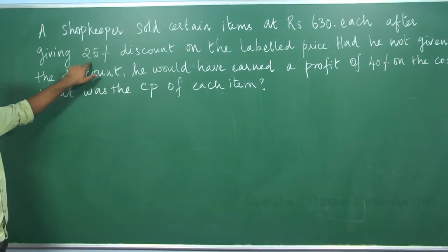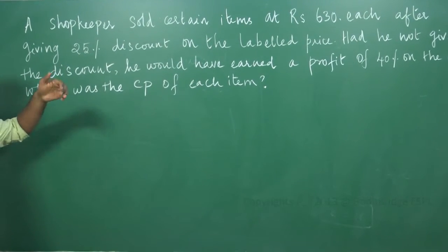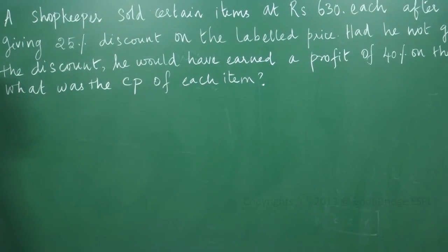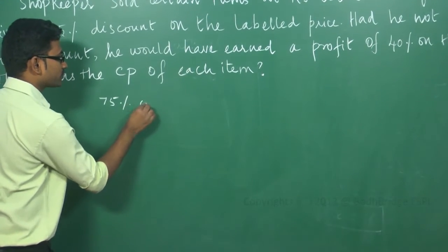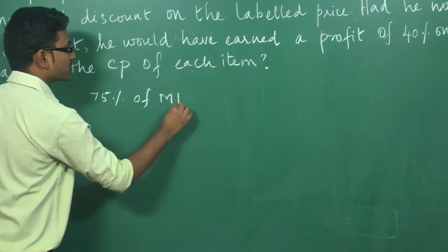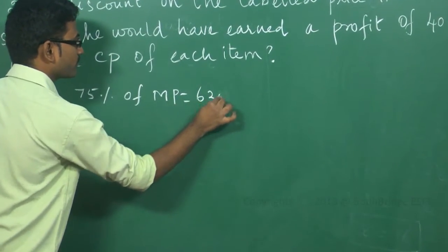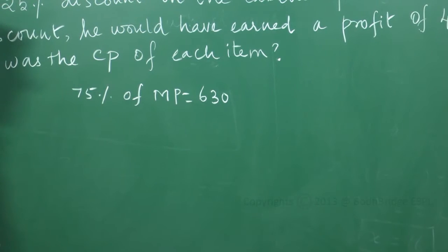So from label price, we are getting only 75% because 25% is given as a discount. So if 75% of market price is equal to 630, you can able to find the market price.